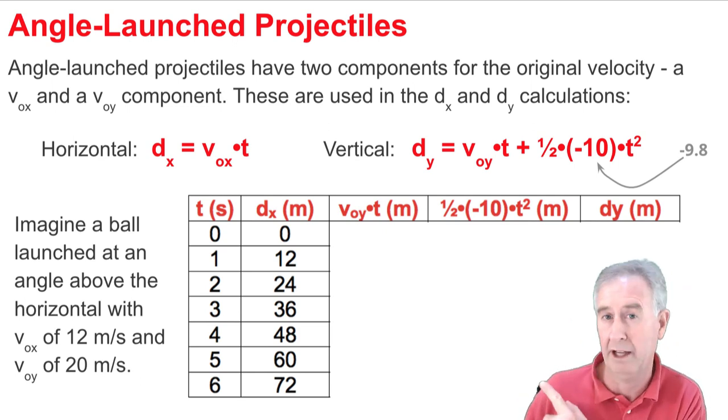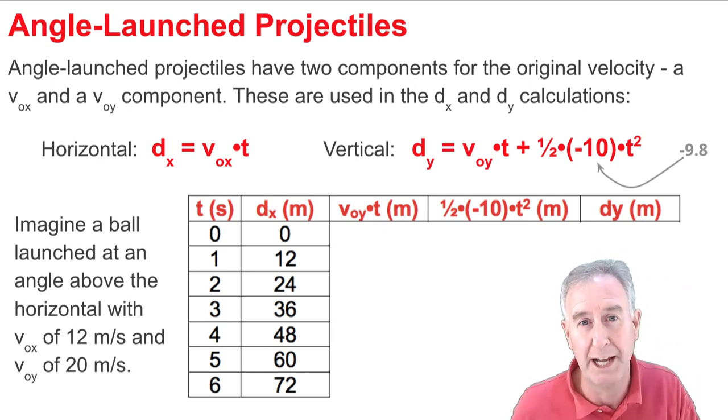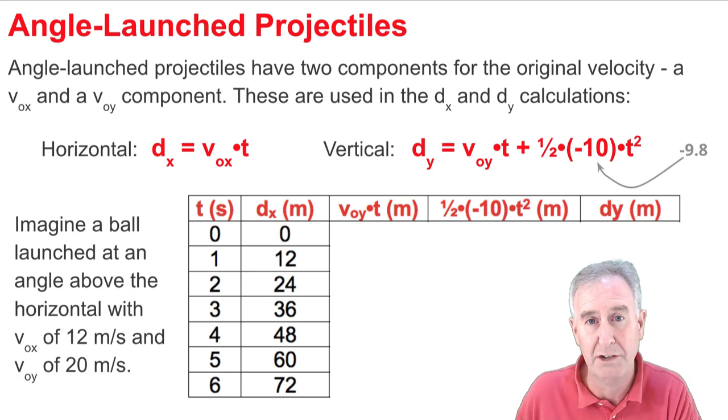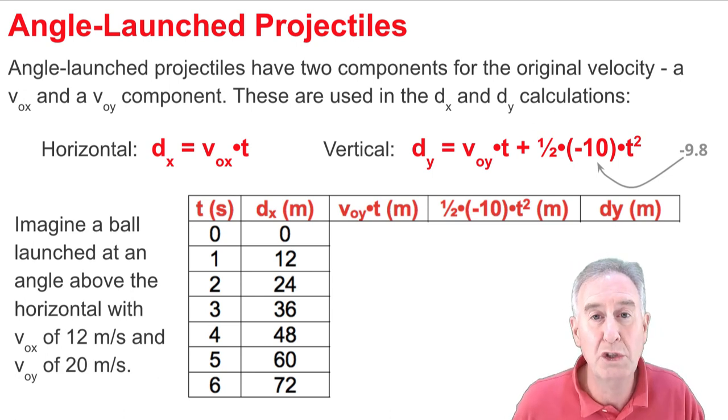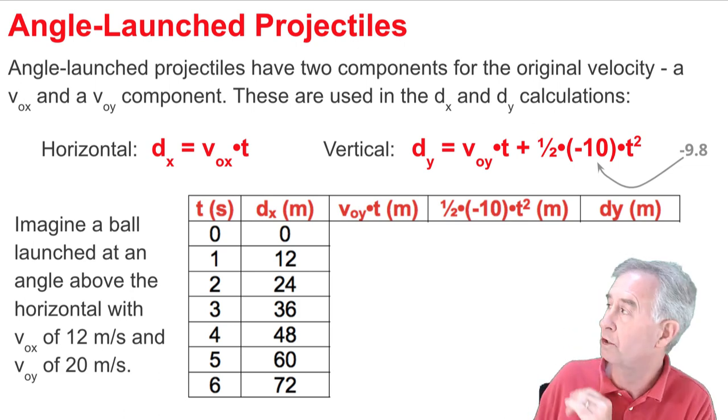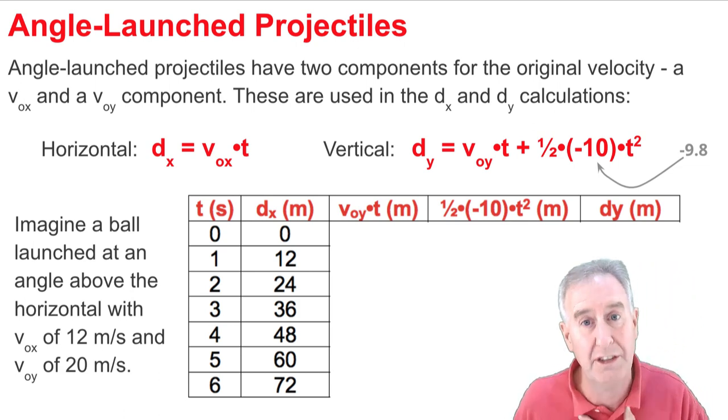For dx, it's a simple formula. We're just going to go 12 times the time, and we end up getting these values. But for dy, there's two terms on the right side. We're going to calculate each term separately. So you'll notice there's a column for each in the table.